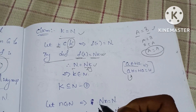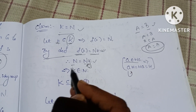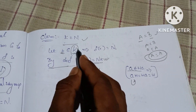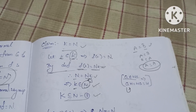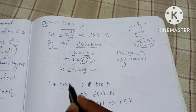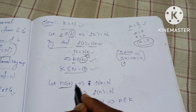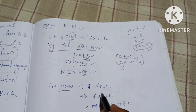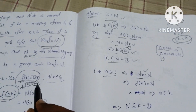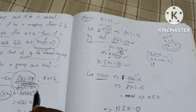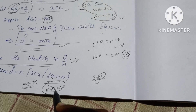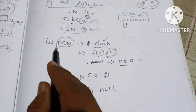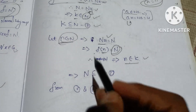In the same way, let small n belong to capital N. Then n belongs to N, and we can show F(n) = Nn = N, the identity of G/N. Therefore n belongs to capital K. So N is a subset of K. From conditions 1 and 2, K equals N.